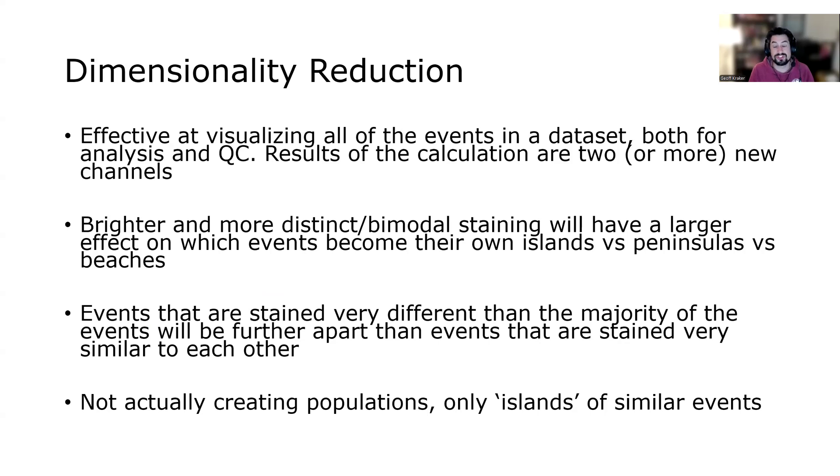The brighter and more distinct the staining is in a particular channel, the more that channel will contribute to the structure of the islands. If it's something like CD4, really bright and distinct, that'll very much pull apart your CD4-positive cells into their own island. Something dimmer or smearier, like CCR7, becomes still something you can order by, but maybe not bright enough to separate something out completely into a different island. And dimmer markers, something like CD25, are going to localize events that are bright in that particular marker, but not have that much of an effect on the structure of the resulting islands that get generated.